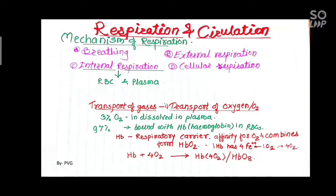Out of total Oxygen transported, only 3% Oxygen is in dissolved form in Plasma. The remaining 97% Oxygen is bound with Hemoglobin in RBCs. Hemoglobin is a respiratory pigment and also a respiratory carrier. It has great affinity — meaning attraction — for Oxygen, and therefore it combines with Hemoglobin.